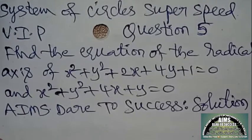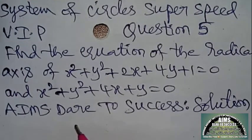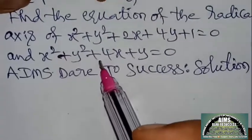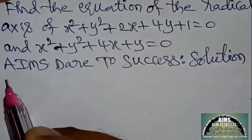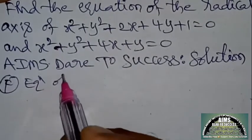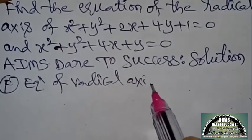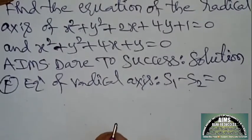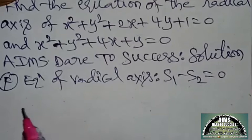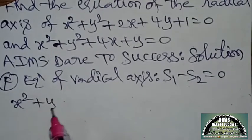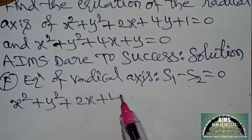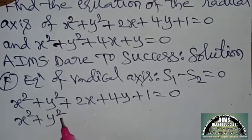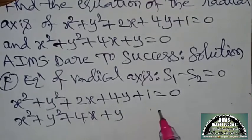AIMS Dare to Success solution — AIMS is not an institution, it is a free service. Now the formula: equation of radical axis — while x² and y² coefficients are the same from first and second circle — S1 − S2 = 0. Writing: x² + y² + 2x + 4y + 1 = 0 and x² + y² + 4x + y = 0.